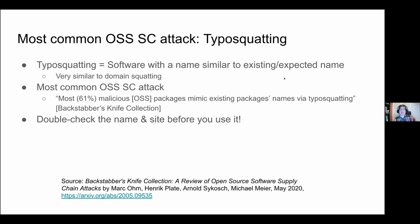The most common kind of supply chain attack for open source software is typosquatting — a maliciously crafted name similar to what the person probably intended. The Backstabber's Knife Collection article looked at various attacks and found it was the most common. If you're using open source software — really any software — double check the name and double check where you're getting it from. It doesn't take long to do the double check.